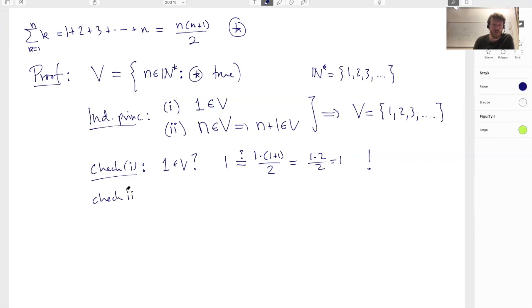Now we check two. So then we suppose that n is in V. What does that mean? So we suppose that this formula here holds for n. So I want to show that we then have n plus one is in V, meaning that if this holds for n, it holds for n plus one. So how to prove this?